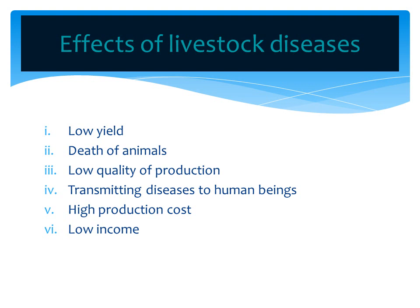Three: low quality of production. Products of diseased livestock are of lower quality. For example, blood-stained milk from a cow, and perforated hides and skins. Number four: transmitting diseases to human beings. Human beings may suffer from diseases by feeding on products of diseased livestock.